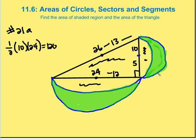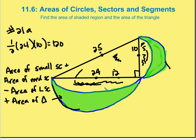Now we need to figure out the area of the green shaded region. Here's the approach: we take the area of the small semicircle and add it to the area of the medium semicircle, then subtract the area of the large semicircle. The large semicircle goes from A to B, the small semicircle from B to C, and the medium semicircle from A to C. So I want the area of the medium semicircle (A to C) plus the small semicircle (B to C), minus the large semicircle (A to B).